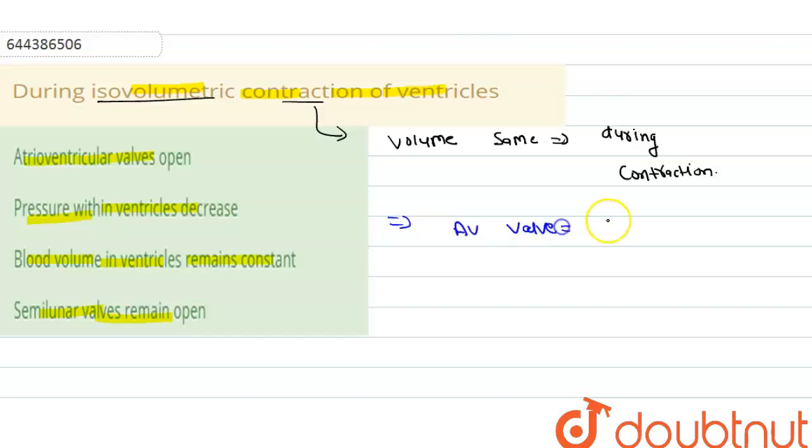A-V valve will be closed, and semi-lunar valve also closed. Now talk about the pressure, so pressure during the contraction will be increased.